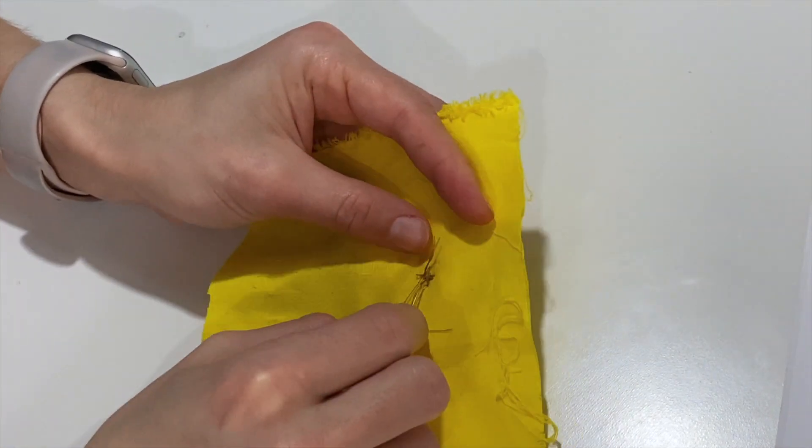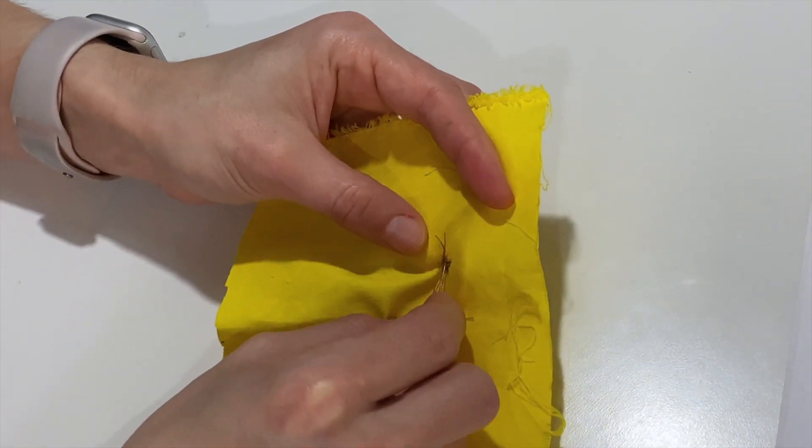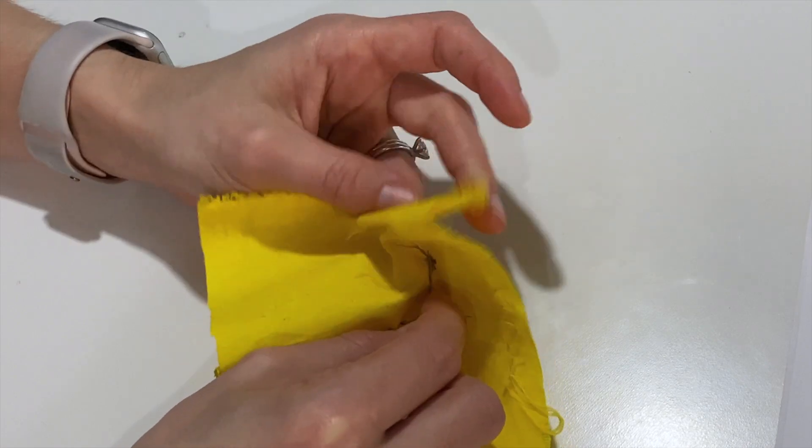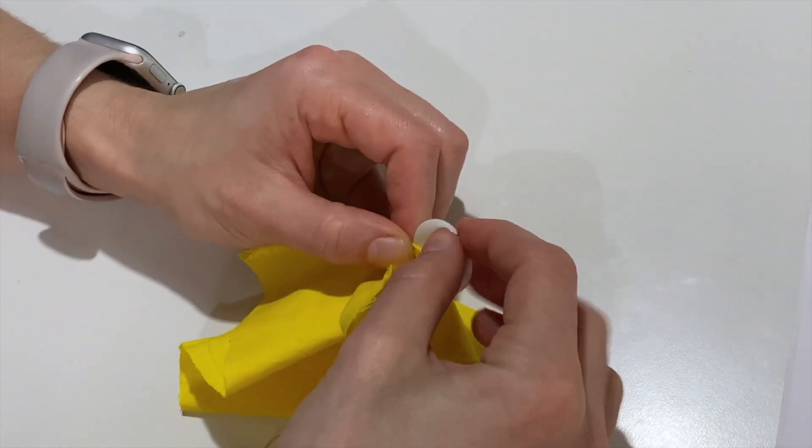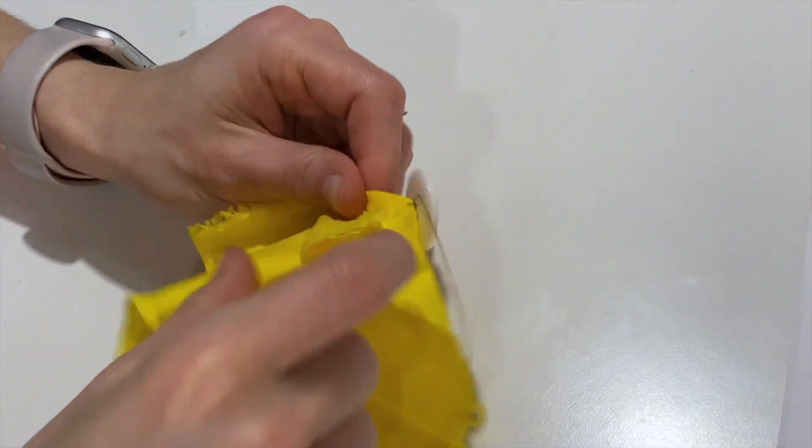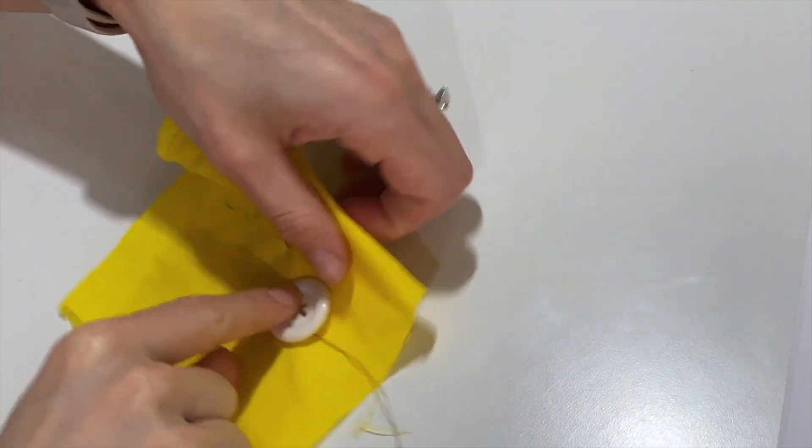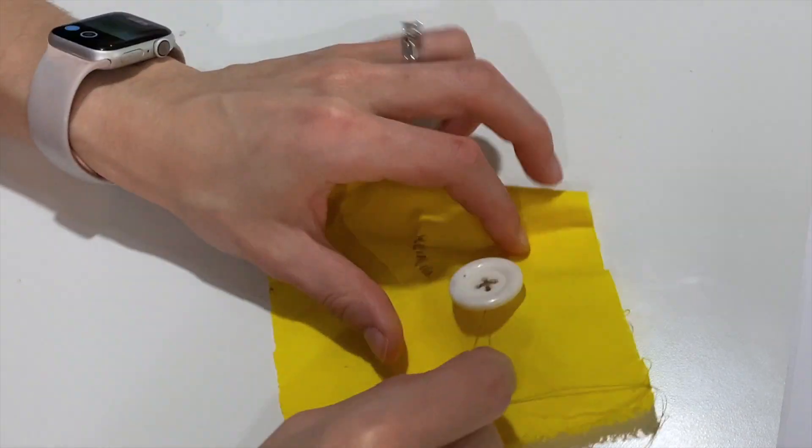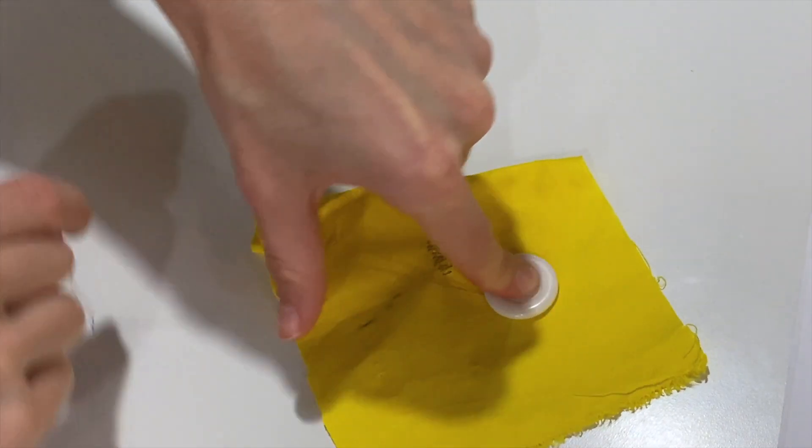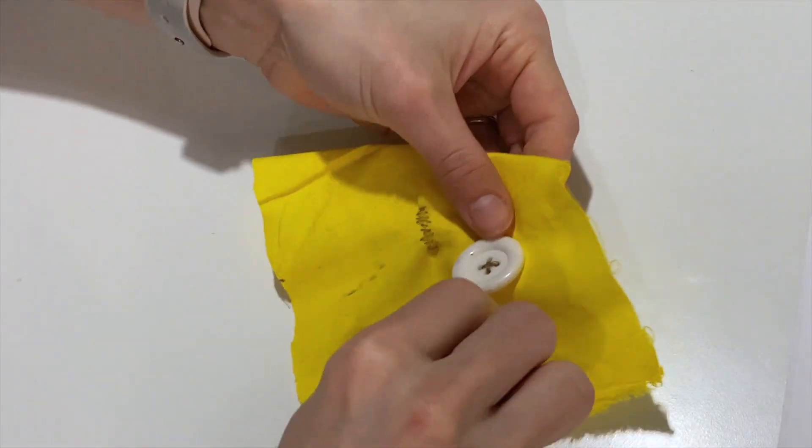Now we're going to do something called the shank. Insert your needle from the back through to the front of the material, but not through the button itself. Keep your needle close to the stitches that are already there. Now, using your left hand to hold the button in place, wrap the string around the base of the button where your thread is four times total.